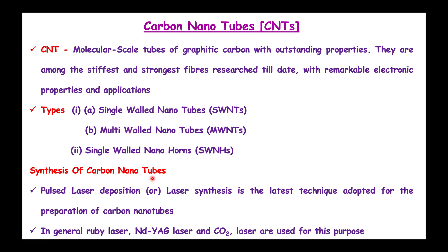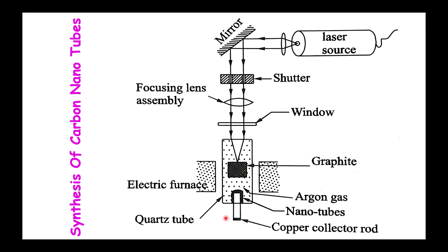Regarding the synthesis of carbon nanotubes — how we can synthesize them — it is done with respect to a graphite sheet using the laser deposition method. We can use several laser types such as ruby laser, Nd:YAG laser, and CO2 lasers. In the synthesis process, the graphite is heated to almost 1200 degrees Celsius. Due to this heat, the carbon evaporates. The carbon then mixes with argon gas and forms a tube-like structure on a copper collecting rod, which we call nanotubes.